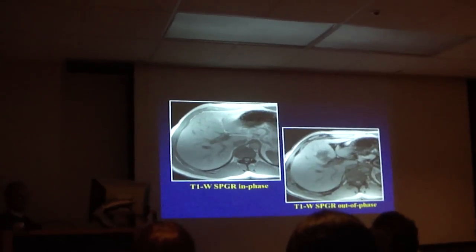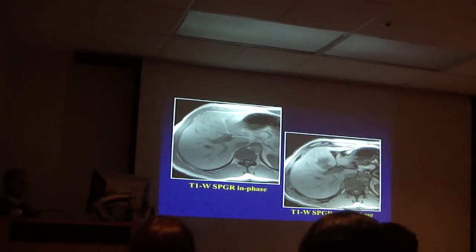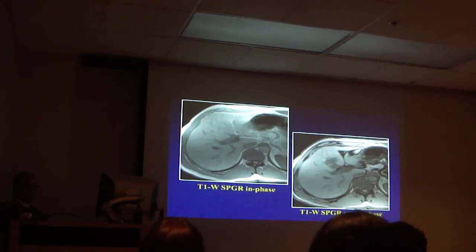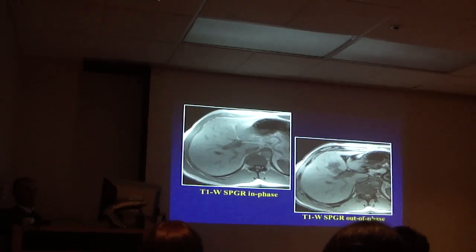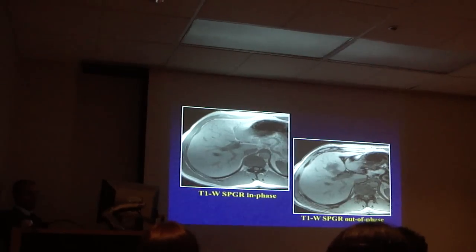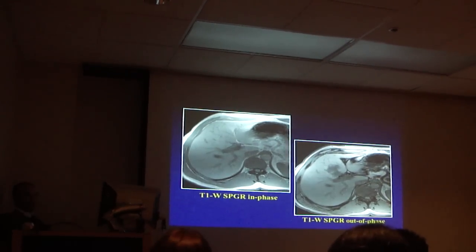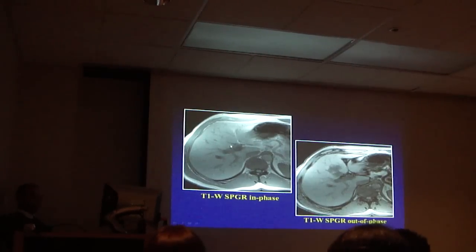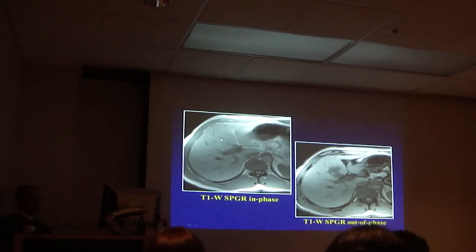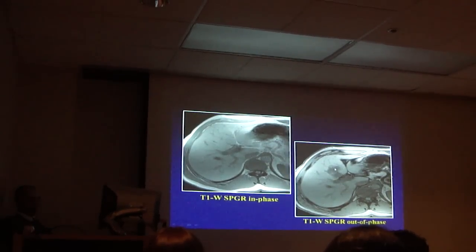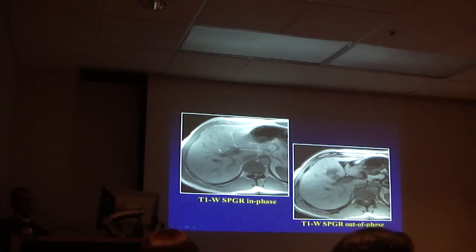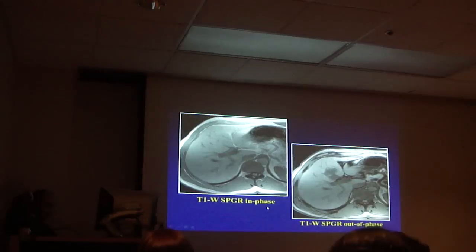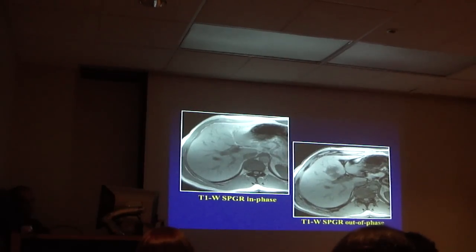What is happening here? Signal drop indicating the presence of fat. Look at the vessels — you don't see the vessel here because of the fat within this area, but the vessel is going through it. A lesion would normally displace the vessels. This could just be a focal fat deposit.